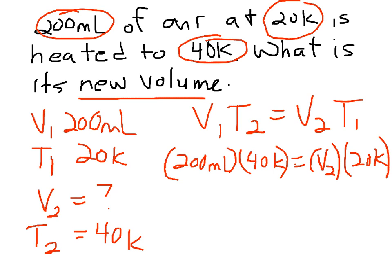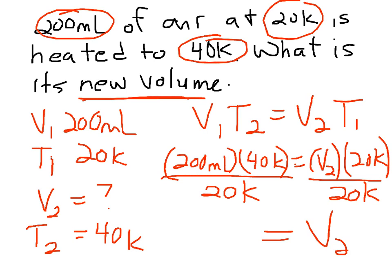At this point, it's simple algebra. You have to isolate V2 because that's what we're looking for. We're looking for the new volume. So simply divide this side by 20K to get rid of it. In algebra, whatever we do to one side, we have to do to the other. So we simply divide. And then V2 is all that's left on this side because those two cancel out. And our answer is 400.